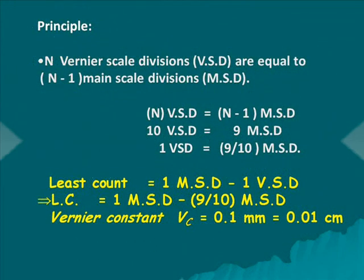Principle: N Vernier scale divisions are equal to N minus 1 main scale divisions. That is, 10 Vernier scale divisions is equal to 9 main scale divisions.